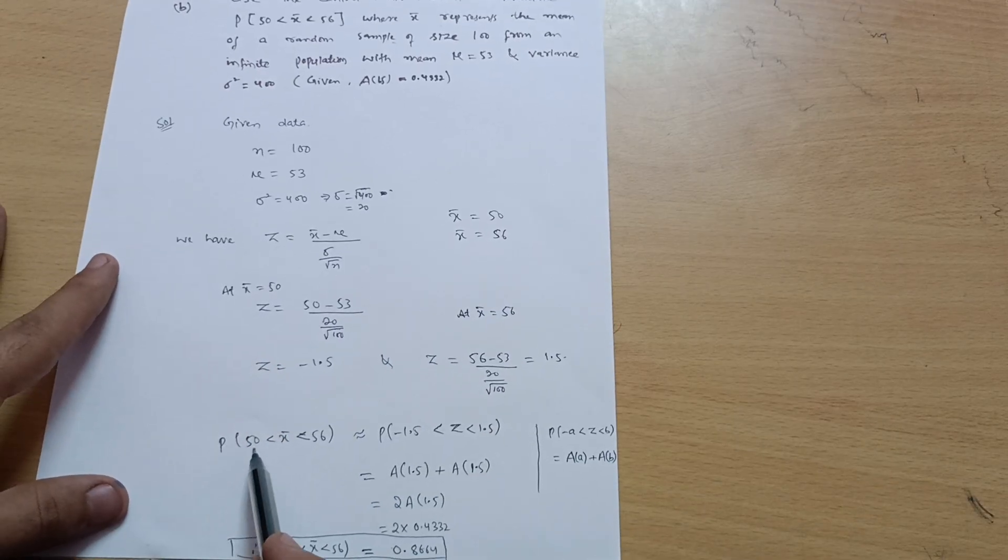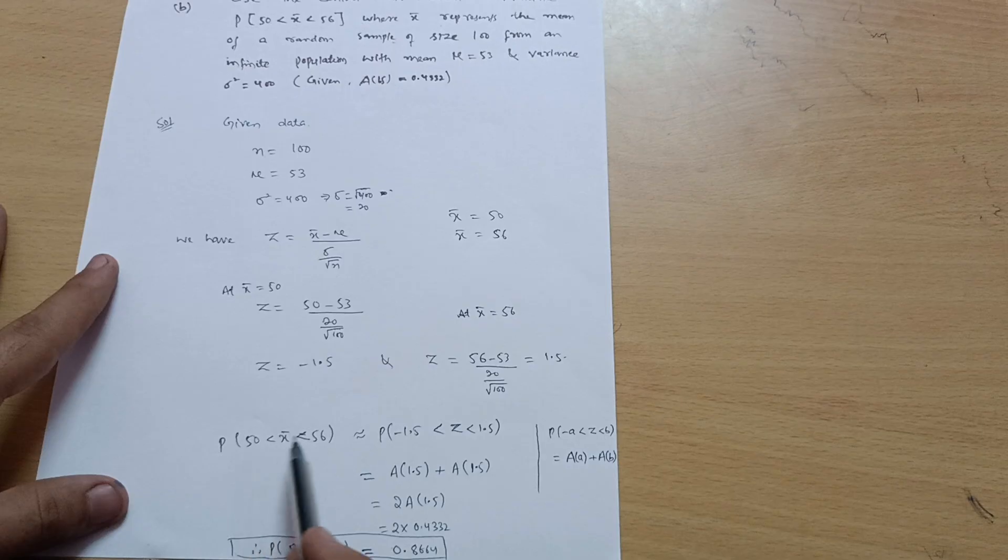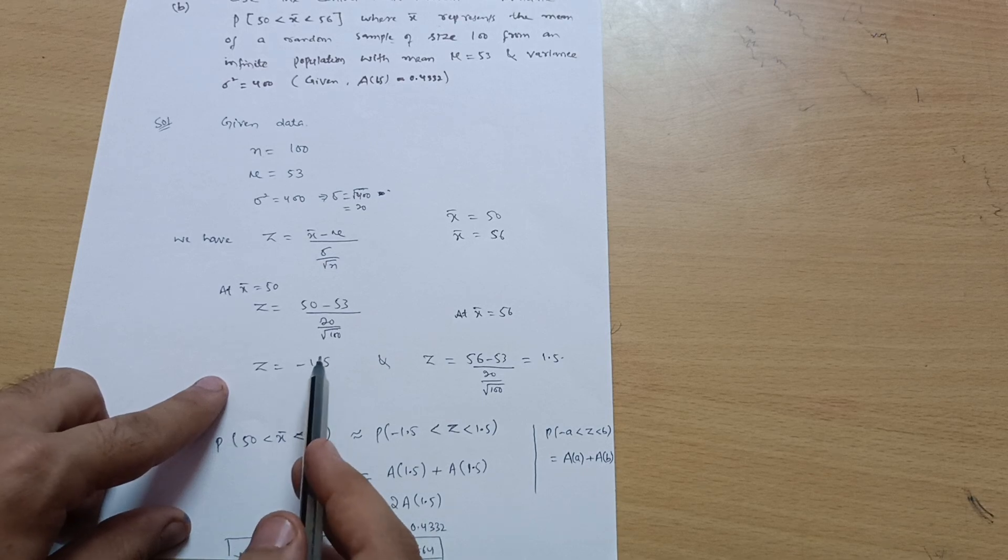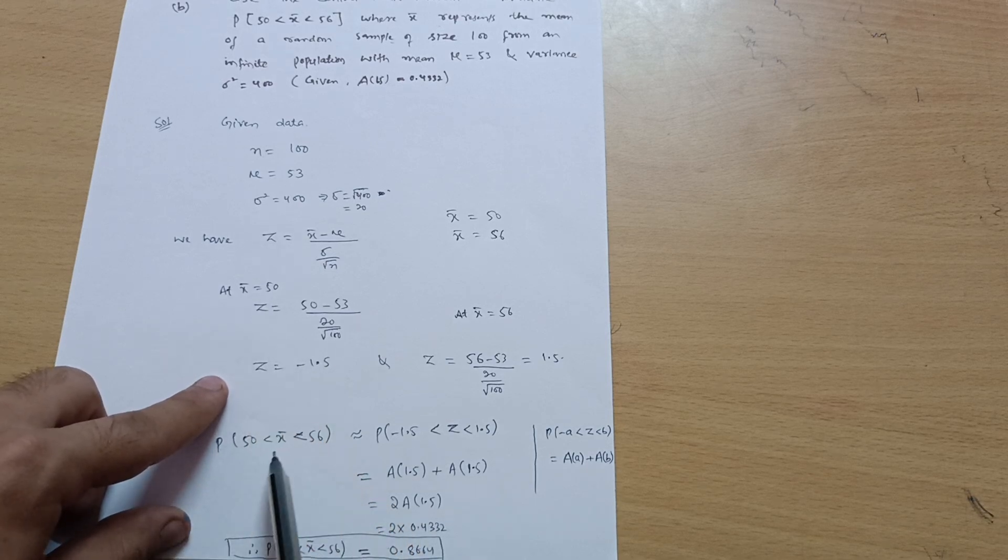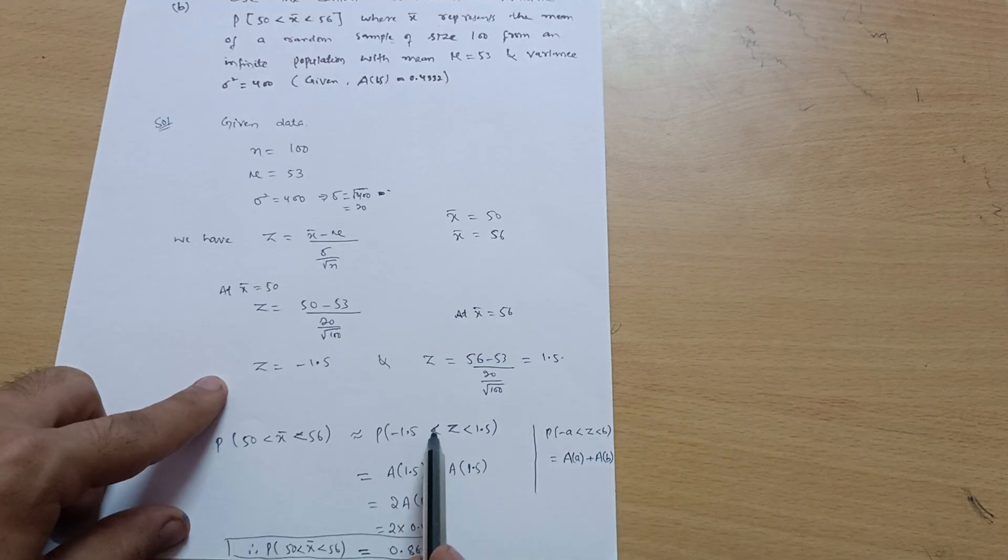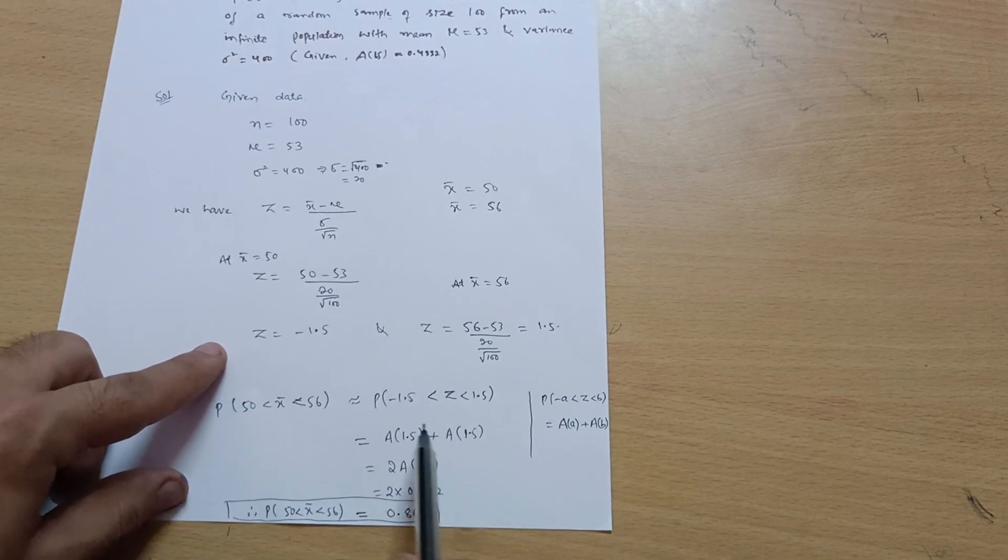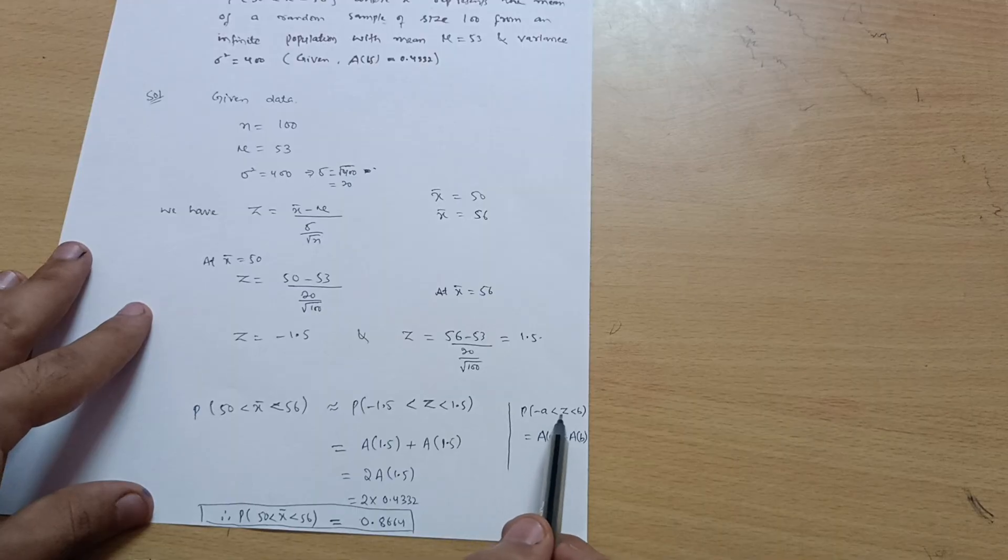Now I can write probability of X̄ greater than 50 less than 56. We usually write it as P(-1.5 < Z < 1.5), since at 50 we get -1.5 and at 56 we get Z = 1.5. Now there is a formula: P(-a < Z < b) = A(a) + A(b).